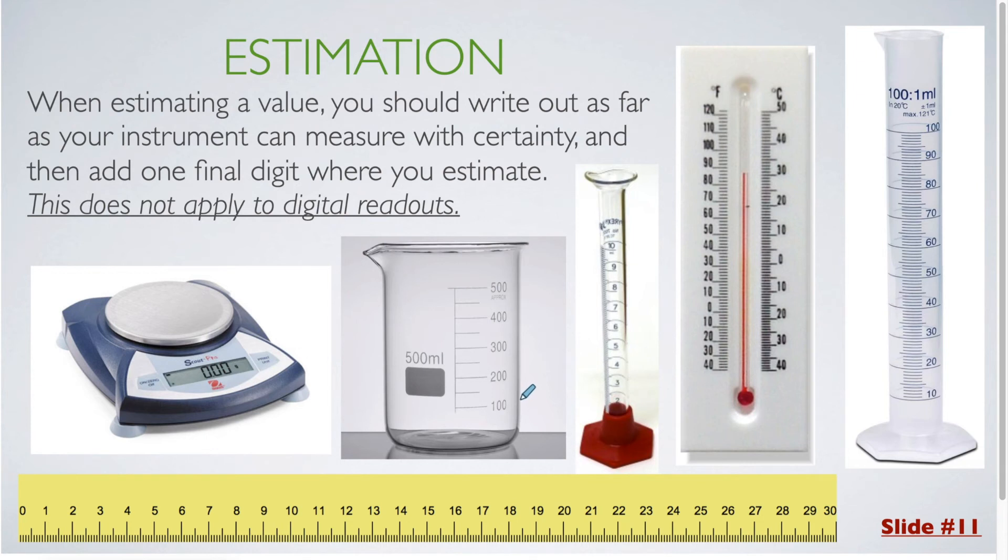So for example, in this beaker, you're going up by hundreds. So we have 100, 200, 300, and so on. You can see the hundreds place, but they don't show you any marks for the tens place. So if my water level was somewhere here, slightly above the 100 mark, I wouldn't record that measurement as 100. I also couldn't say that it is 105.27. There's no way that I could be that precise. So what I do is estimate one past what I could see. I can see that it's somewhere between 100 and 150. So maybe I estimate that as 110 milliliters.